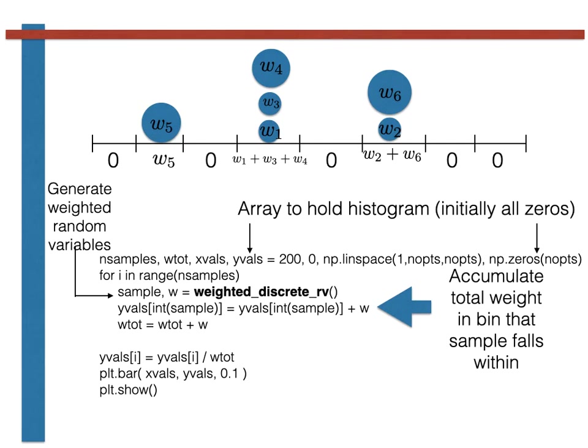Once the loop is finished we could normalize the histogram by dividing by the total weight of all the generated points and plot a bar chart that shows the final histogram.